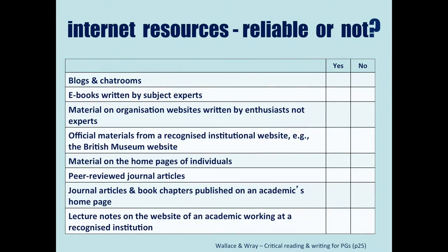Official materials from a recognised institutional website — for example, the British Museum — should be reliable. Material on home pages of individuals — no, because we don't know who they are. Peer-reviewed journal articles — yes. Because they've been peer-reviewed: other academics have read them, checked the methods, quality, writing, and structure, and agreed they are of sufficient quality and worth.